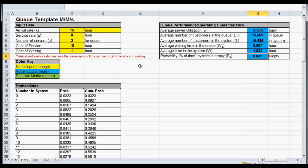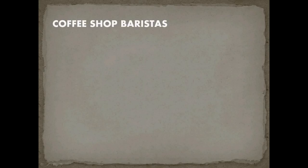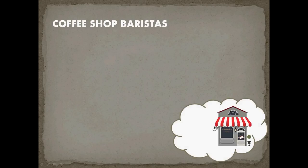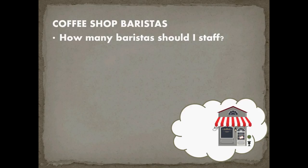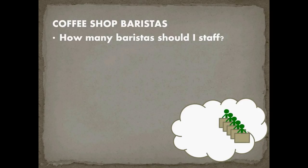So let's go back and look at an example, and we'll use this template to answer it and explore. The first example problem we're going to look at is a coffee shop, and the coffee shop needs to determine how many baristas they should hire. We did some analysis of other coffee shops, and what we determined was this is an MMS system — arrivals are Poisson, service tends to be exponential, and our decision is s, how many baristas do I need to staff?